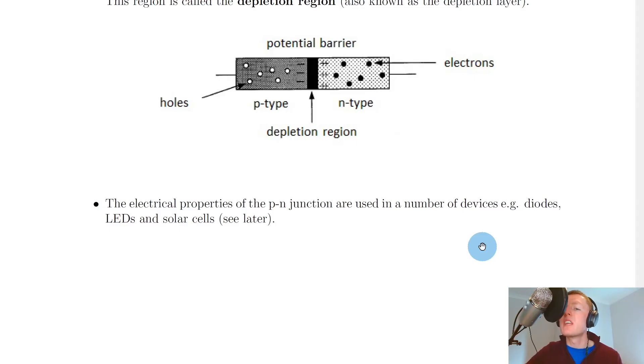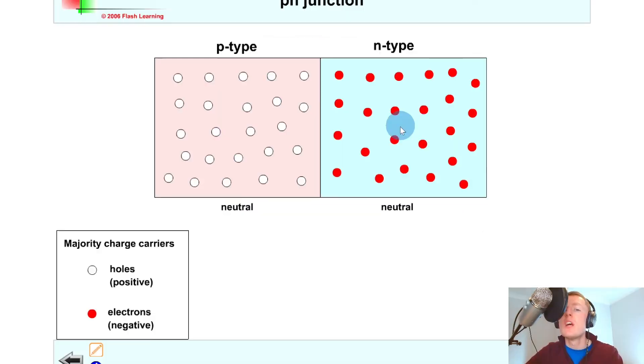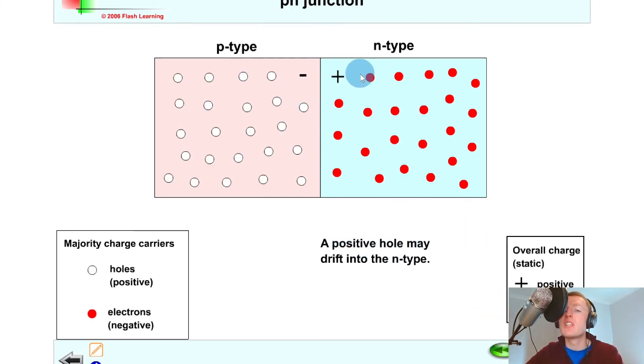Just to help summarize the steps, I'm going to show you a quick simulation. If we start with our separated P-type and N-type materials that are both neutral, you'll see we've got the positively charged holes drawn for the P-type and the negatively charged electrons drawn in the N-type. Firstly, we have that a positive hole may drift into the N-type, but we may also have an electron drifting into the P-type.